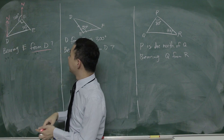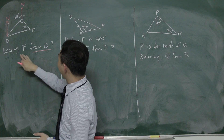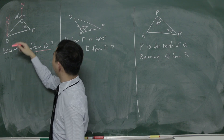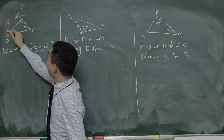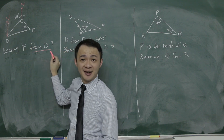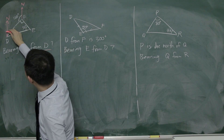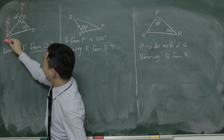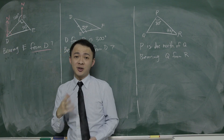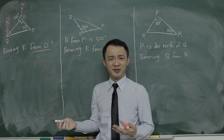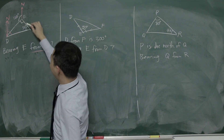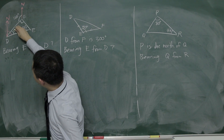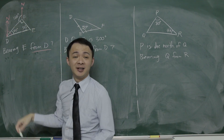This is my north at D. They want bearing E from D, so from the north at D, I rotate the angle clockwise until I touch line ED — that is the whole angle I want to find. To find this angle, I first solve the triangle. The triangle has angles 90° and 50°, so the remaining angle will be 40° (180 minus 90 minus 50).